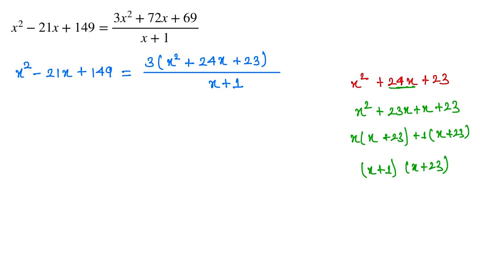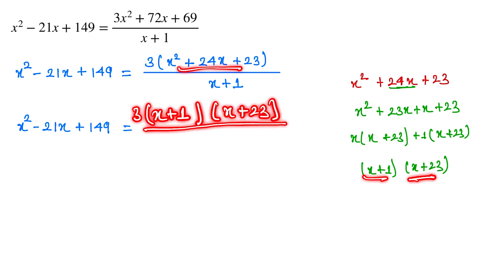So here we can write x² - 21x + 149 equals 3 times (x + 1)(x + 23) divided by (x + 1). From here, x + 1 and x + 1 is cancelled out.